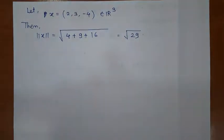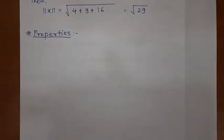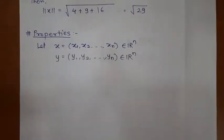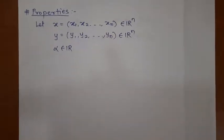In this way we calculate the norm of any point. Now let us discuss a few properties of norm. Let X and Y be any arbitrary elements of Rn, and let alpha be any real number. The first property is: norm of x is the same as norm of minus x.